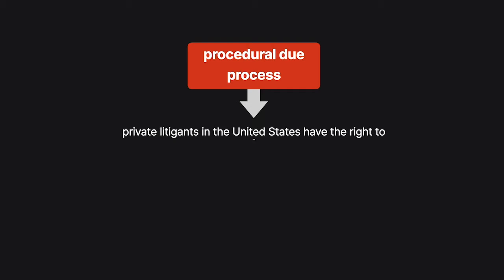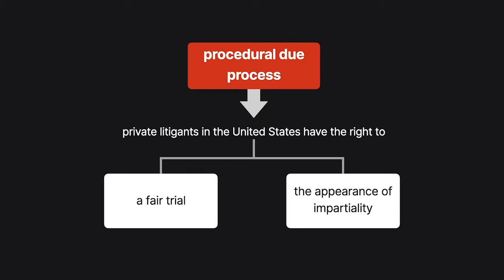Thanks to procedural due process, private litigants in the United States have the right to a fair trial, and equally important, the right to the appearance of impartiality.